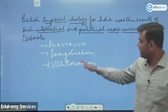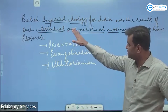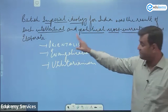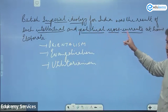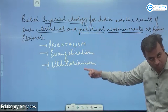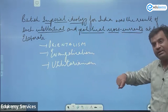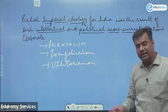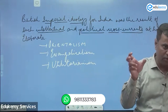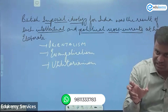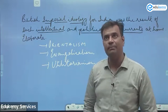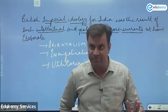The ultimate objective was to further consolidate colonial rule over India. So these are the major philosophies. British imperial ideology was the result of intellectual and political cross currents developing in the European world that got implemented in India in different phases: first Orientalism, then Evangelicalism, then Utilitarianism. You have to explain each with examples.